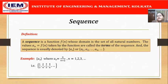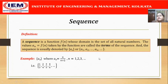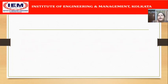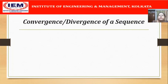Now, a sequence contains an infinite number of terms, so the most obvious question that comes to our mind is: what happens to the members of the sequence as n approaches infinity? How do they behave as we approach infinity? This question is actually addressed by the concept of convergence or divergence of a sequence. Let us revisit these definitions once.